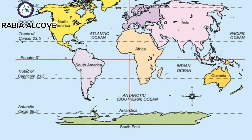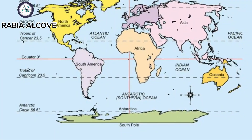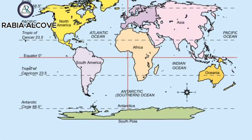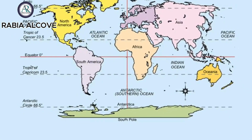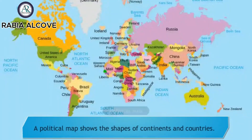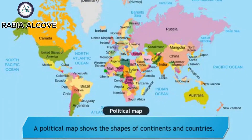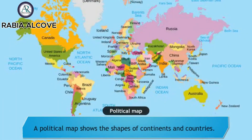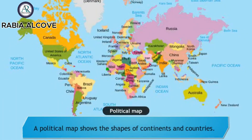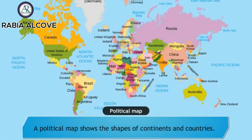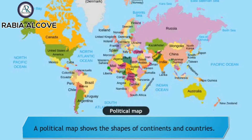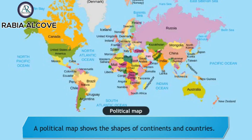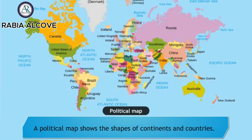Maps are of different types. Each type gives out specific information. A political map shows the shapes of continents and countries. Political maps could change over time as a result of wars or politics.